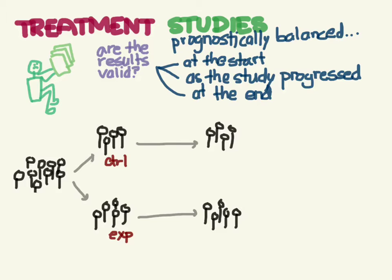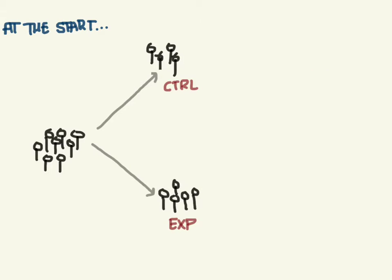Let's go through all of these, starting with the first one: at the start. We want to be sure that the control group and the experimental group are pretty much the same in every respect — the same number of diabetics, hypertensives, men, women, elderly, and young people. All the different factors we could look at, we want them to be the same.